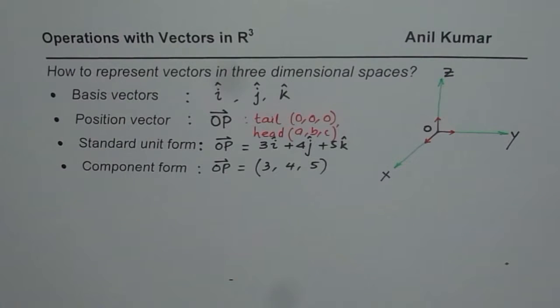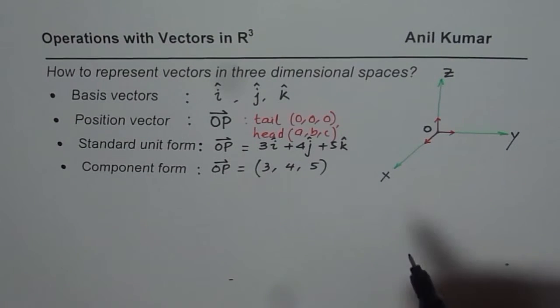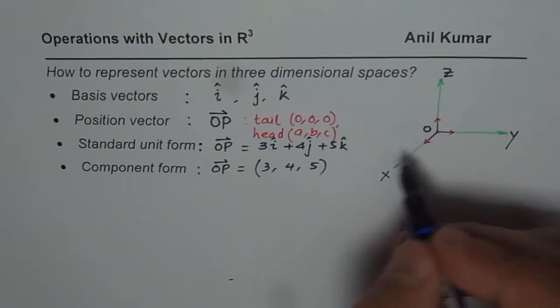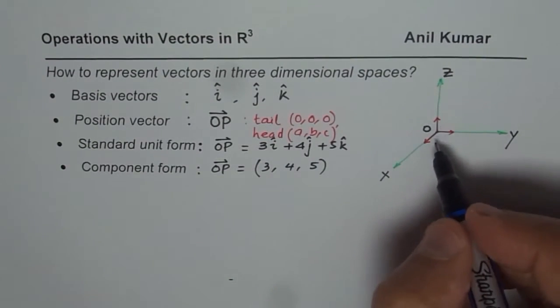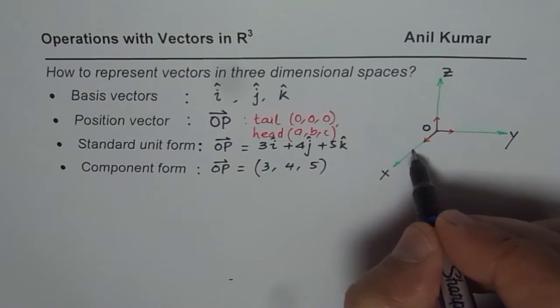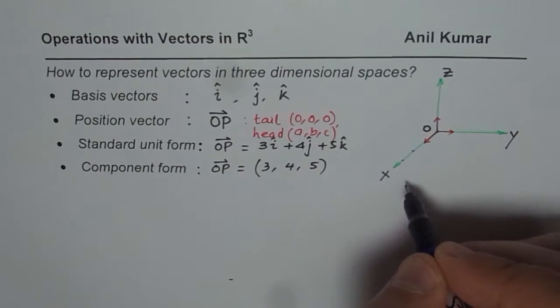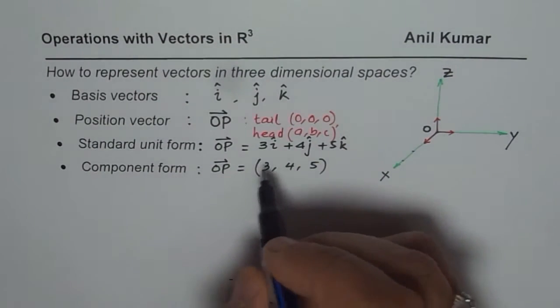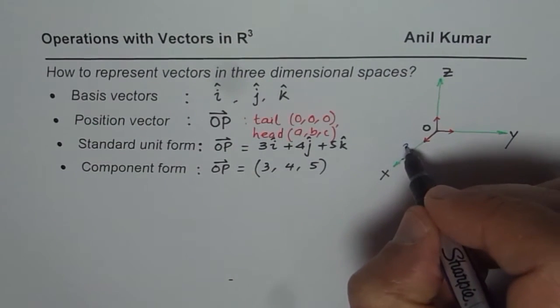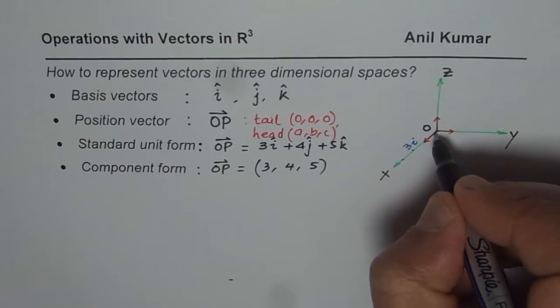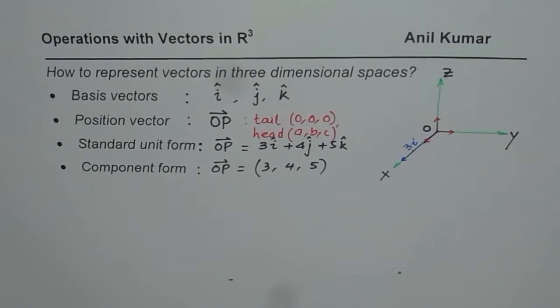Let me also show you how to sketch it and find where point P is. We have to use three units along the X. This is 1, then 2, and 3. So from here to here will be 3i.